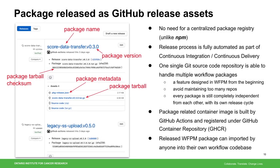WFPM packages are released as GitHub release assets. With this, there's no need to have a centralized package registry. One single git repository is able to handle multiple workflow packages. This feature helps avoid having to maintain a large number of repositories. Despite residing in the same repository, each package is still completely independent from each other with its own development and release cycle. A released package can be imported by anyone into their own workflow code base.